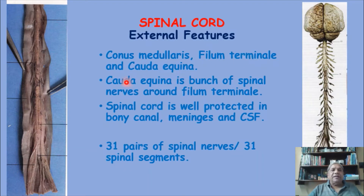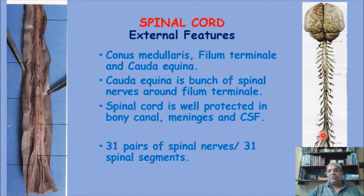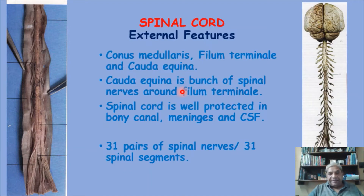The cauda equina is the bunch of nerves taking origin from the lumbar, sacral, and coccygeal parts of the spinal cord segments, arranged together as a bunch. As you can see in the diagram, many spinal nerves travel together and ultimately exit from their respective intervertebral foramina. This bunch surrounding the conus medullaris and filum terminale is called the cauda equina because it resembles the hairs in the tail of a horse.